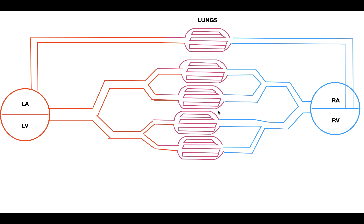I'd like to start by looking at the general structure of the cardiovascular system. The cardiovascular system is made up of the heart and vessels. The heart is a double pump system — there is a left heart, which receives and pumps oxygenated blood, and a right heart, which receives and pumps deoxygenated blood. The first vessel is the aorta, which comes off the left ventricle and delivers oxygenated blood into the rest of the systemic vasculature.